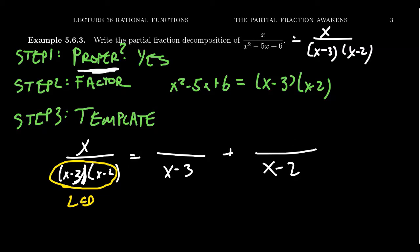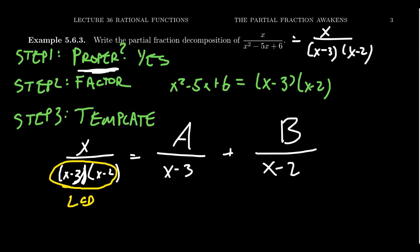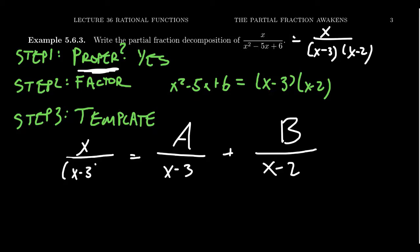Since the two proper fractions add together to give a proper fraction, and if the denominator is linear — like x minus 3 — then the numerator needs to be a smaller degree. The only degree smaller than degree 1 is degree 0, which is a constant. So the numerator is just a number we don't yet know; we'll call it A. Same for the other fraction: the numerator is another constant, B. So the template is A over (x minus 3) plus B over (x minus 2), giving us the equation: x over (x minus 3)(x minus 2) equals A over (x minus 3) plus B over (x minus 2).